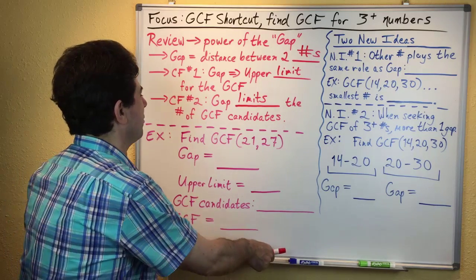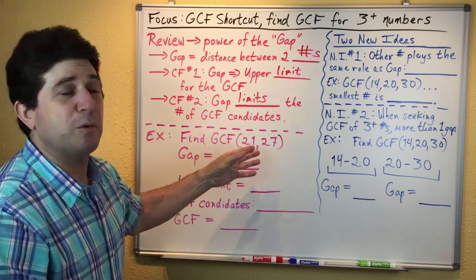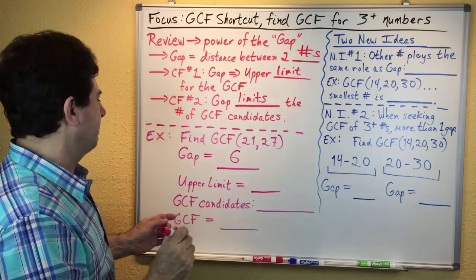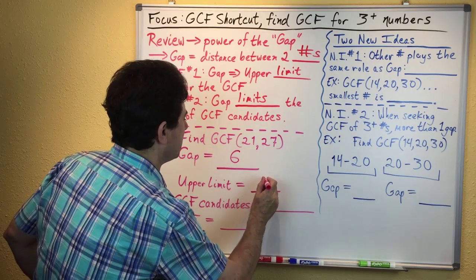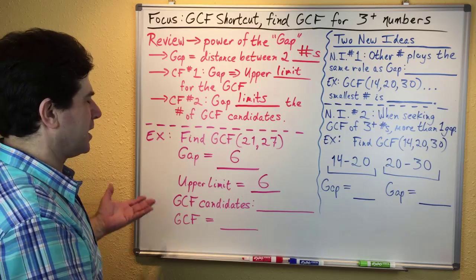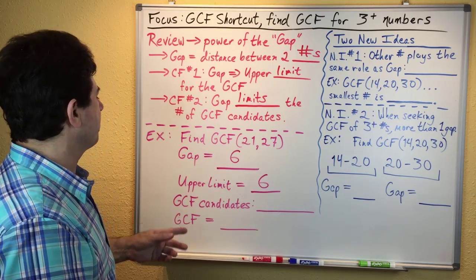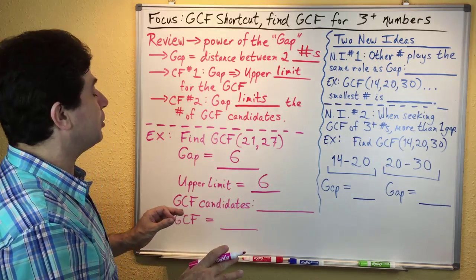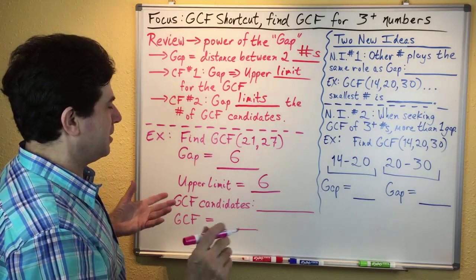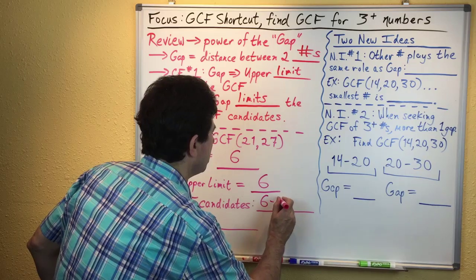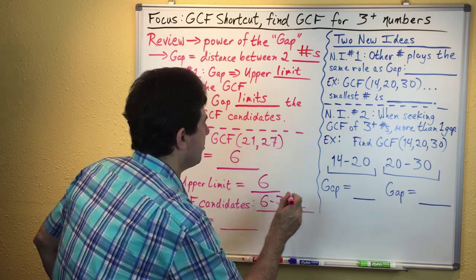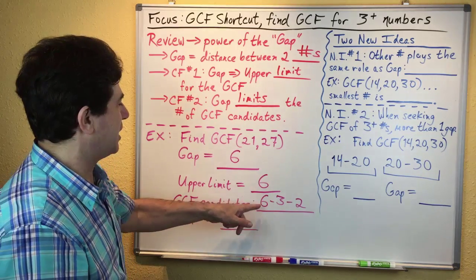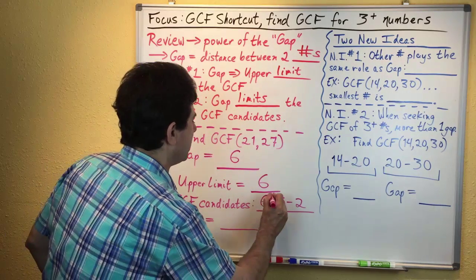Let's do a quick example to review. Let's say you were finding the GCF for 21 and 27. These two numbers are six apart, so the gap is six, meaning the upper limit for the GCF is six. The GCF candidates are the factors of six in descending order: six, then three, then two. We ask, does six go into 21? No, so six cannot be the GCF.